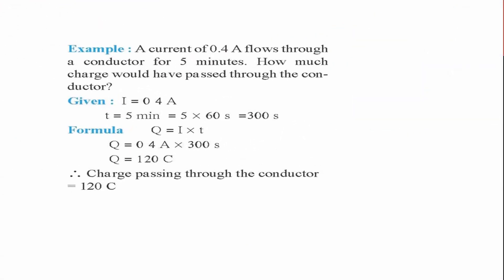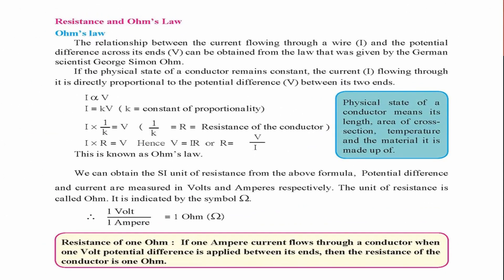Example: A current of 0.4 ampere flows through a conductor for five minutes. How much charge passes through the conductor? Given: I = 0.4 A, T = 5 minutes = 5 × 60 = 300 seconds. Using Q = I × T: Q = 0.4 × 300 = 120 coulombs. So the charge passing through the conductor is 120 coulombs.